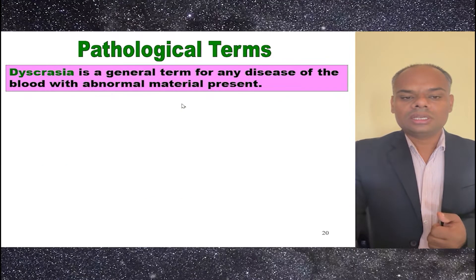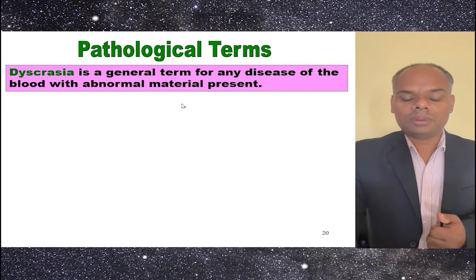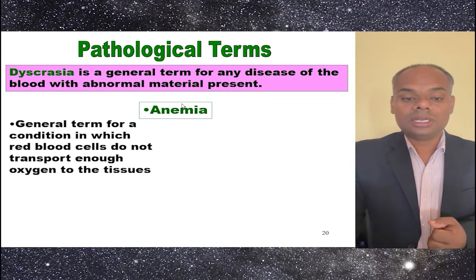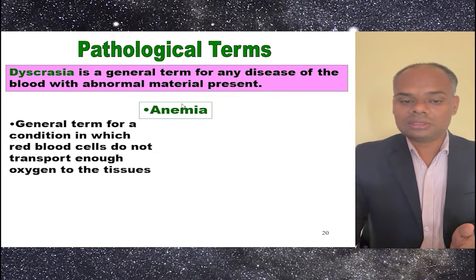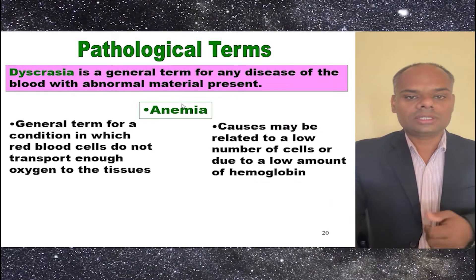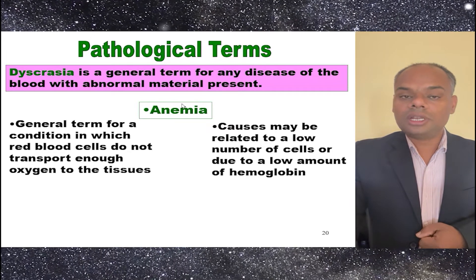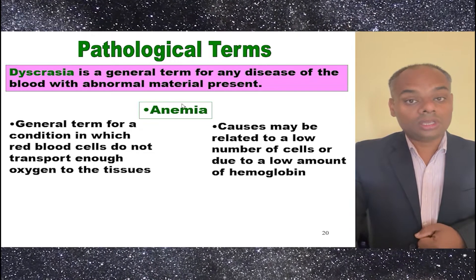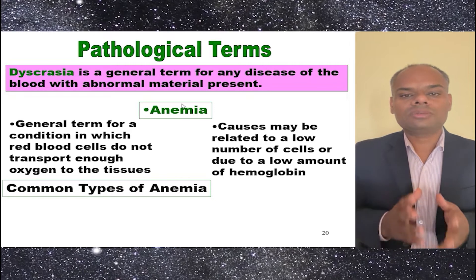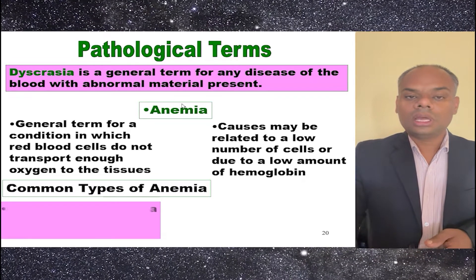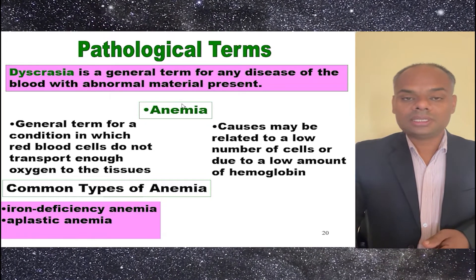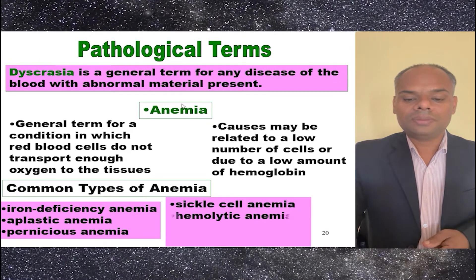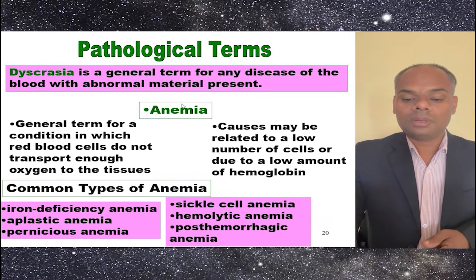Next comes dyscrasias, a general term for any disease of the blood with abnormal material present. Anemia is a general term for a condition in which RBC cells do not transport enough oxygen to the cells. It may be related to a low number of cells or a low amount of hemoglobin. Common types of anemia are iron deficiency anemia, aplastic anemia, pernicious anemia, sickle cell anemia, hemolytic anemia, and post-hemorrhagic anemia.